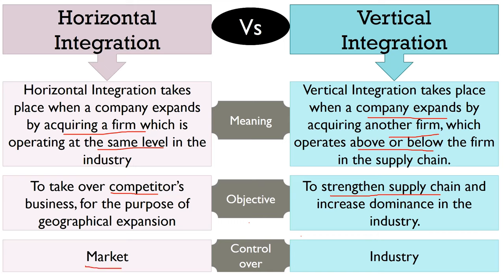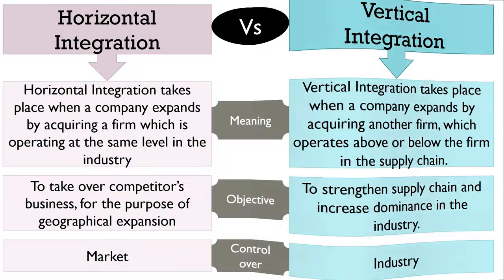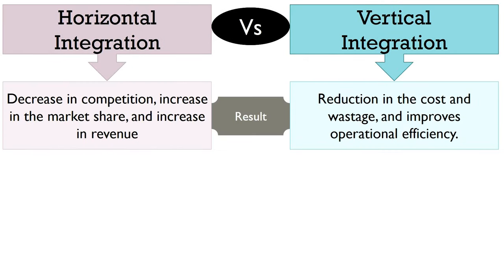Horizontal integration results in control over the market because it occurs when a firm takes over a competitor's business, which creates monopoly and ultimately dominance over the entire market. Conversely, vertical integration leads to control over the industry, as when the company acquires firms operating at different levels of the supply chain, the entire process is performed in-house. Horizontal integration results in decreased competition, increased market share, increased revenue, and helps achieve economies of scale. Whereas vertical integration results in reduction in the cost of transportation and inputs, reduces wastage of material, and improves operational efficiency.